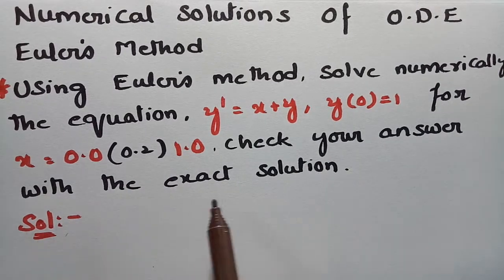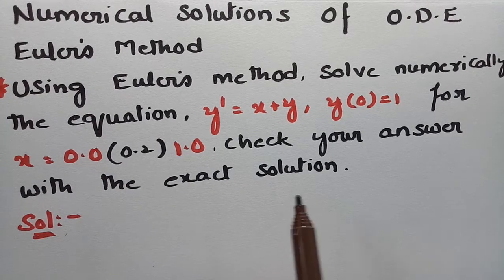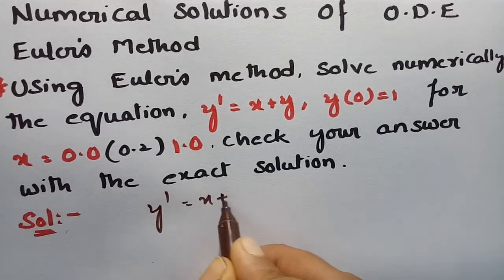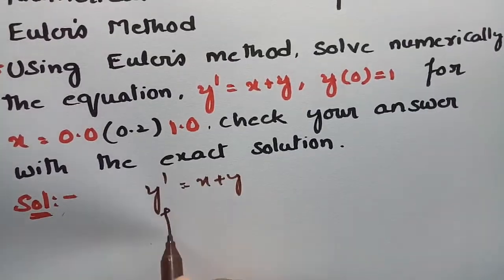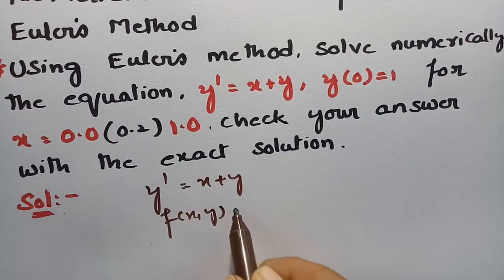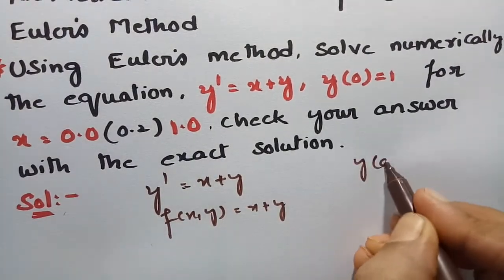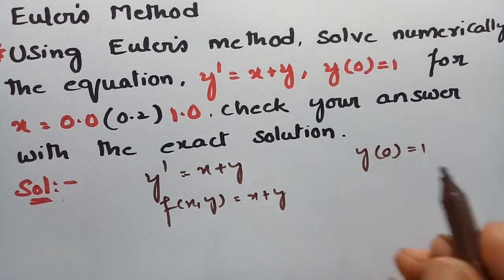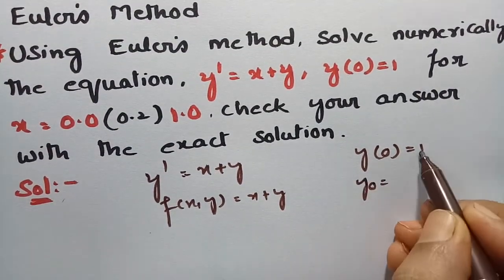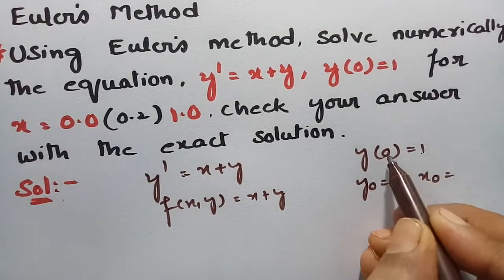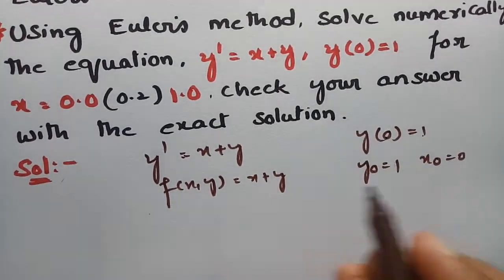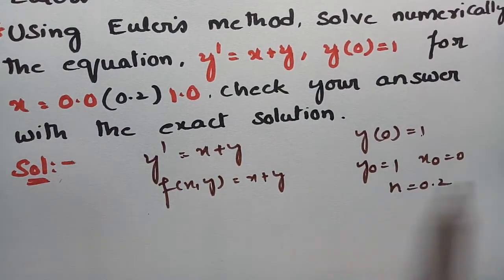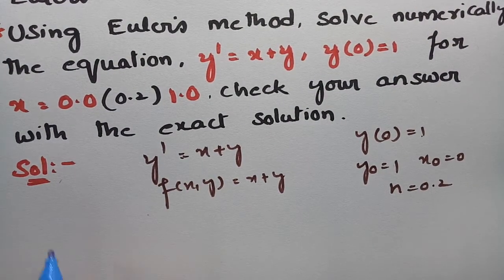We also have to check our answer with the exact solution. So what is given? y' = x + y, which we consider as f(x, y) = x + y. It is given that y(0) = 1, so y₀ = 1, x₀ = 0, and the step size h = 0.2. We will use Euler's method.